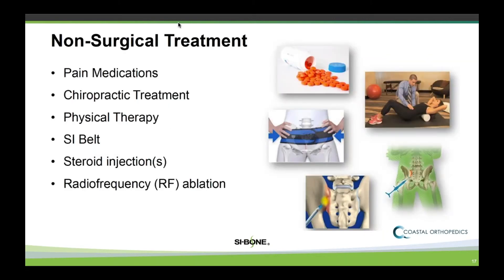So what are non-surgical treatments? Of course, anti-inflammatory medications or pain medications, chiropractic treatment, and physical therapy can be effective. The SI belt is something that some doctors use — I don't use it too often, but I don't have a problem with it if someone finds that it helps alleviate their symptoms. Steroid injections or even radiofrequency ablation to those nerves going to the SI joint can all be used for treating SI joint pain.